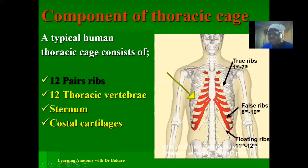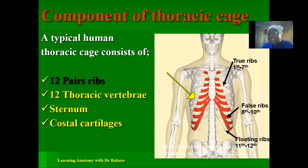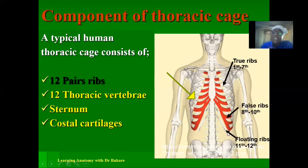The next set are the floating ribs. From the name, you already know what they mean. The floating ribs connect to the thoracic vertebra posteriorly but do not form any structural connection — whether directly or indirectly — to the sternum. They are floating within this space, and the 11th and 12th ribs are classified as floating ribs. So we have true ribs, false ribs, and floating ribs, classified based on their connection with the sternum.